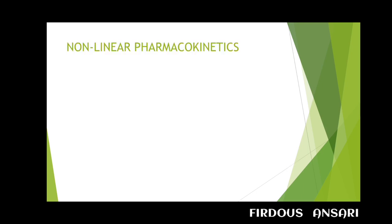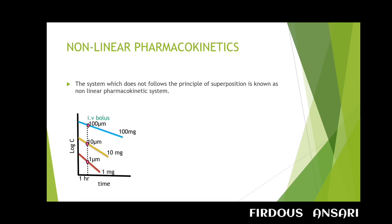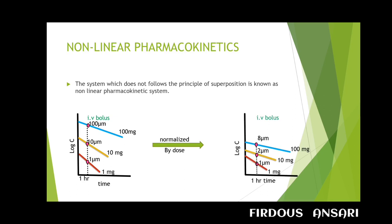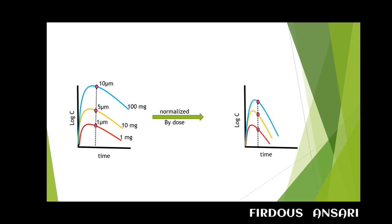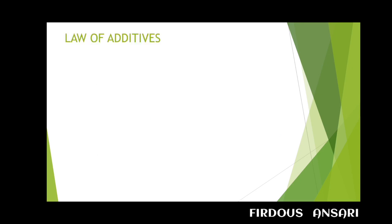In contrast, a non-linear pharmacokinetic system is one that does not follow the principle of superposition. For various doses of intravenous bolus, we get different curves, and when normalized to a single dose, these curves do not superimpose over one another — that is non-linear pharmacokinetics. The law of superposition mainly depends on two important laws: the law of additivity and the law of homogeneity.